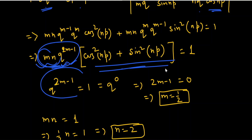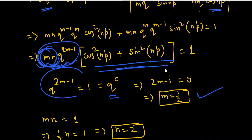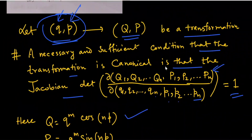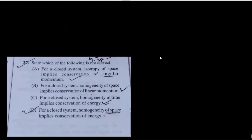For this to equal 1, we need mn = 1 and q^(2m−1) = 1, i.e., 2m − 1 = 0, giving m = ½. Since mn = 1 and m = ½, we get n = 2. Therefore m = ½ and n = 2, so option C is correct.